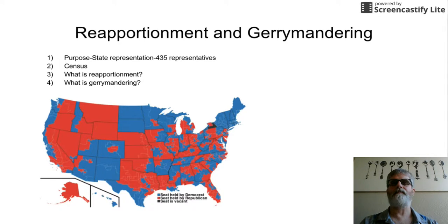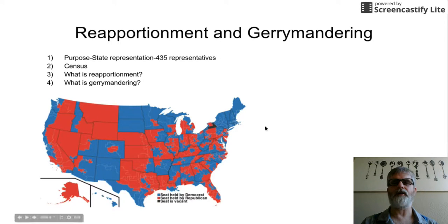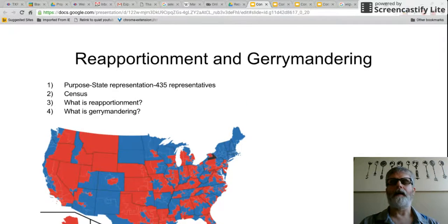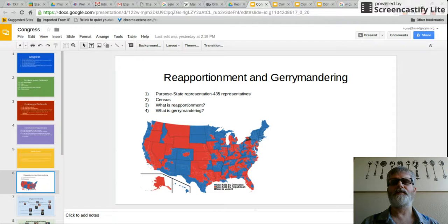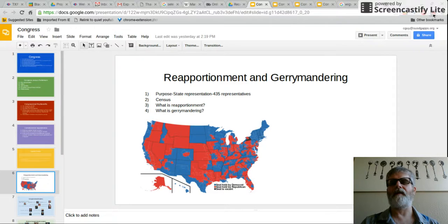Ninety percent of incumbents in Congress are reelected, which is pretty significant for the House. That means a lot of the districts are safe districts, and that's due to gerrymandering. A lot of people want more competitive elections through term limits, but if you get rid of gerrymandering, you can actually make the elections more competitive. Feel free to ask questions in class, and we'll play the redistricting game to give you a better idea of what reapportionment is.